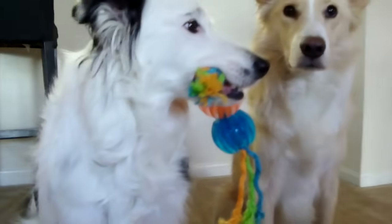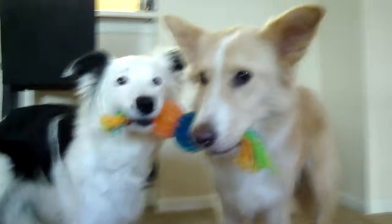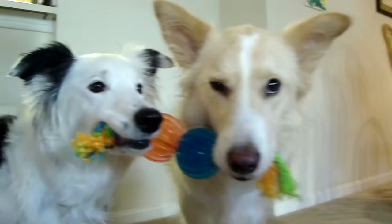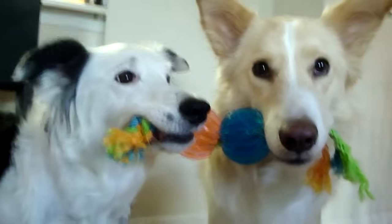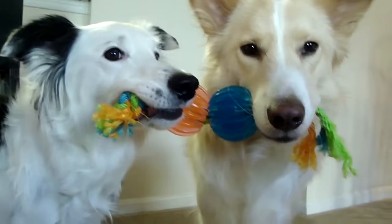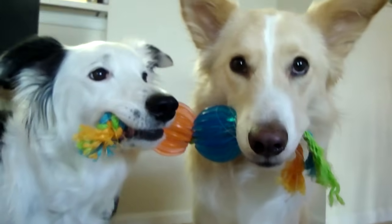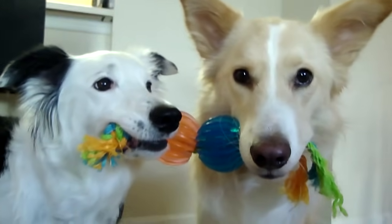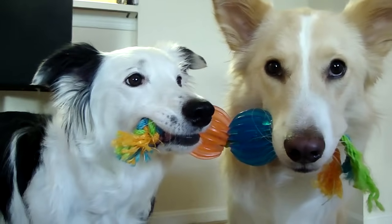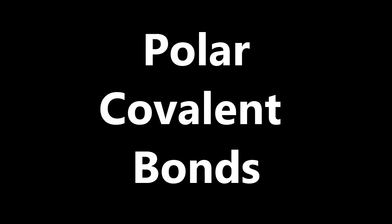Covalent chemical bonds involve the sharing of a pair of valence electrons by two atoms. There is also what is called polar covalent bonds.